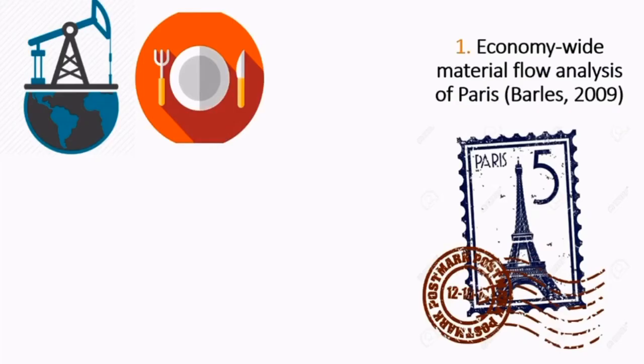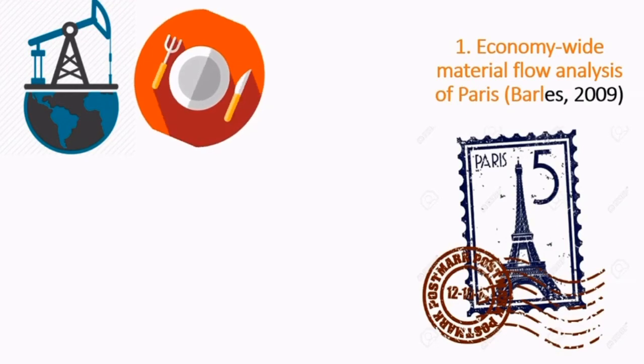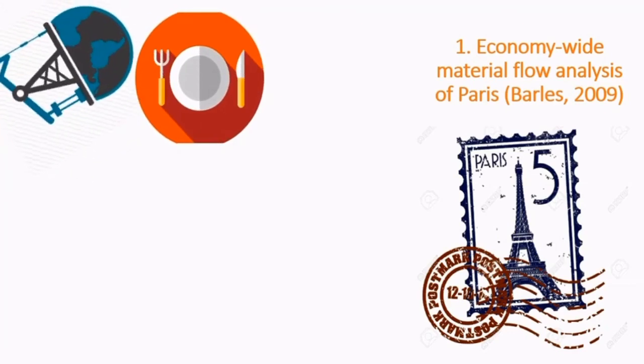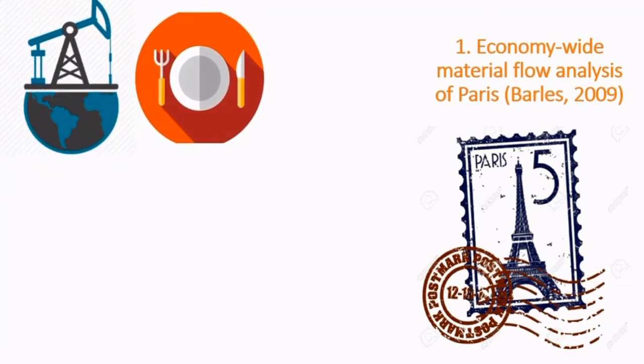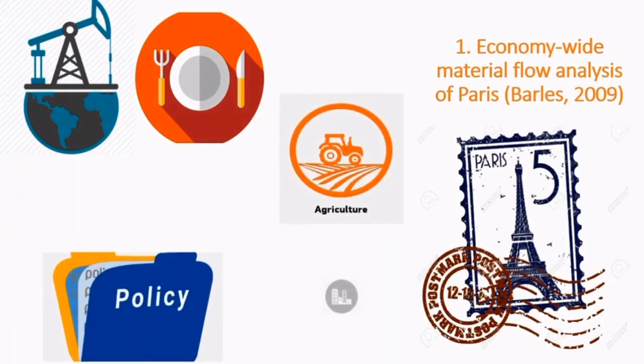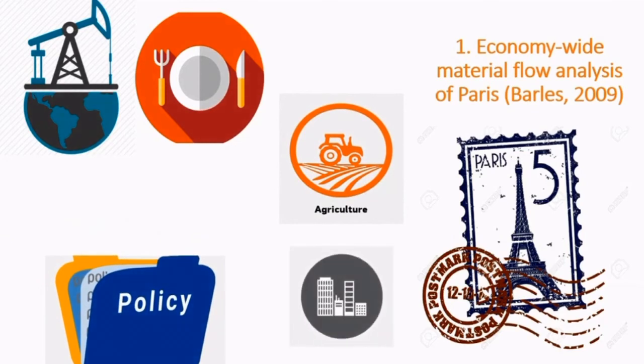Economy-wide material flow analysis of Paris. Paris has high consumption of food and goods in the city centre, while in suburban areas, Paris has high fossil fuels and construction materials consumption. Some of the control measures include creating new public policies on waste management and strengthening ties between urban and agricultural policies.